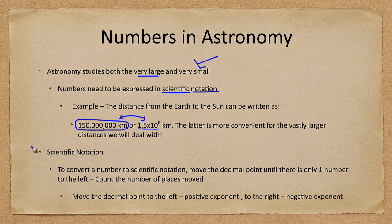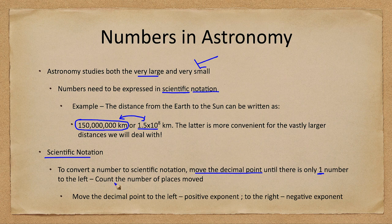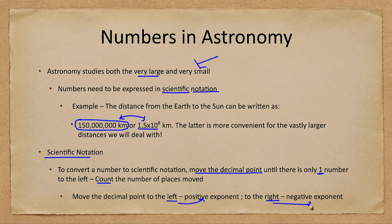So how do we convert a number into scientific notation? We move the decimal point until there is only one number to the left, and you count how many places you had to move it. If you move the decimal point to the left you get a positive exponent, and if you move it to the right you get a negative exponent.